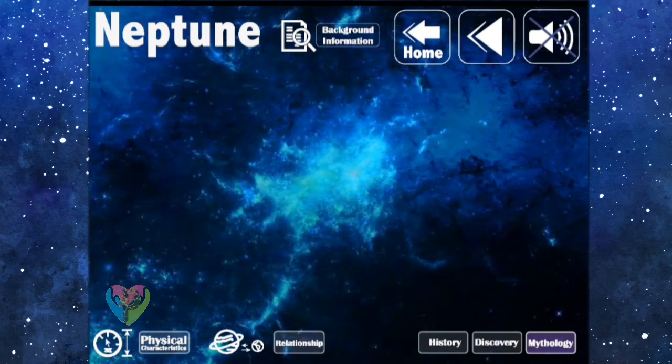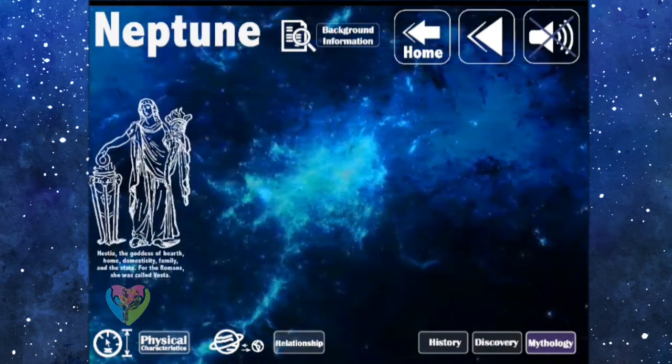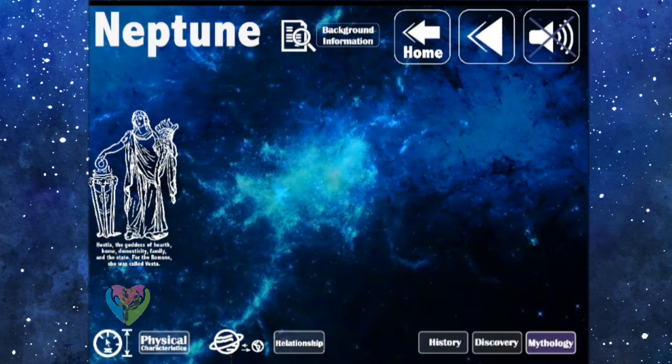1. Hestia: The goddess of Earth, home, domesticity, family, and the state. For the Romans, she was called Vesta.